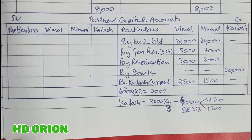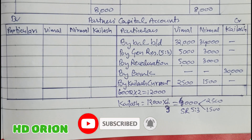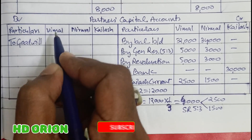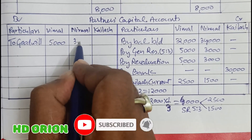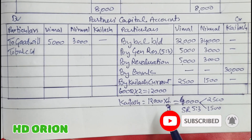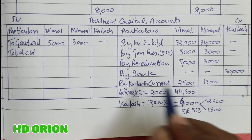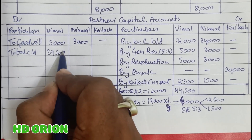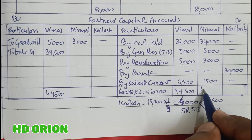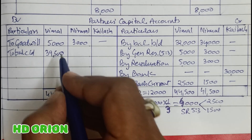All appropriations are made. Now we write off old goodwill of rupees 8,000 in old ratio — rupees 5,000 and rupees 3,000. Closing the accounts: Vimal's grand total is rupees 44,500 minus rupees 5,000 equals rupees 39,500; Nirmal's grand total is rupees 41,500 minus rupees 3,000 equals rupees 38,500.